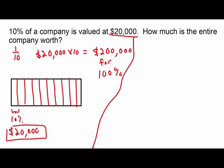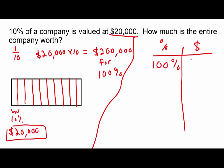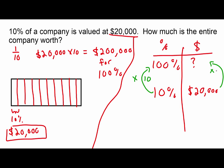Using the T-chart: write percent and dollars, 100% at the top with a question mark, then 10% = $20,000 below. Make your arrow times 10 — ten times ten is 100. Multiply $20,000 by 10 as well, and that question mark becomes $200,000.